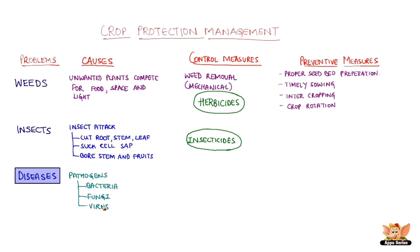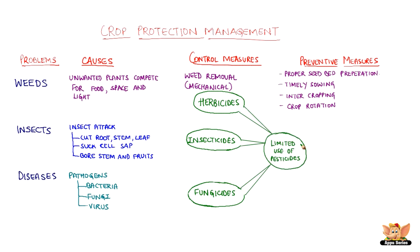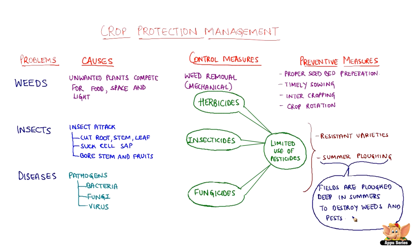Diseases in plants can be caused by pathogens like bacteria, fungi and virus. Proper use of fungicides can help control the diseases caused by fungi. Preventive measures for insect attack and diseases in plants include use of resistant varieties of plants and summer plowing. Summer plowing means plowing fields deep in summer to destroy weeds and pests.